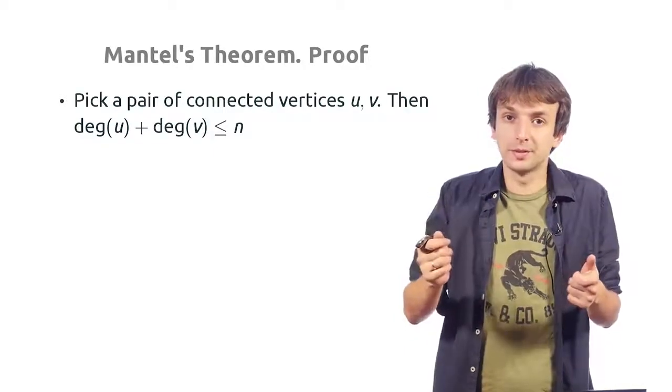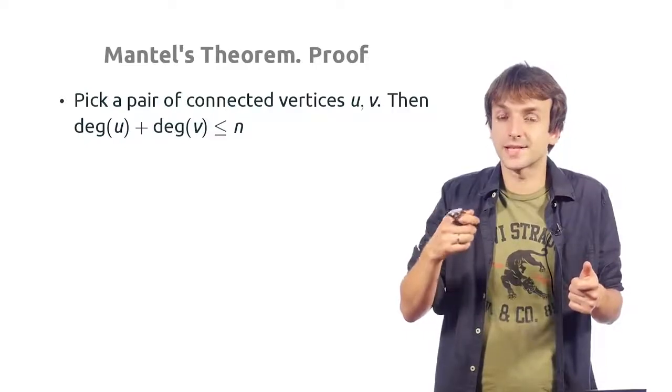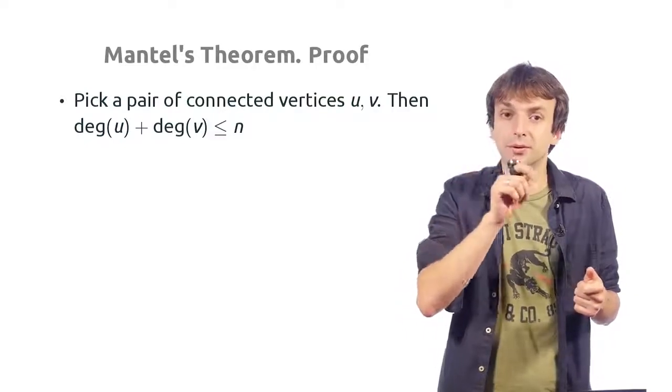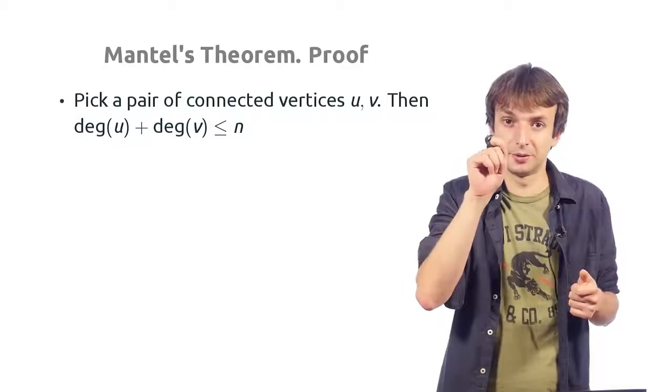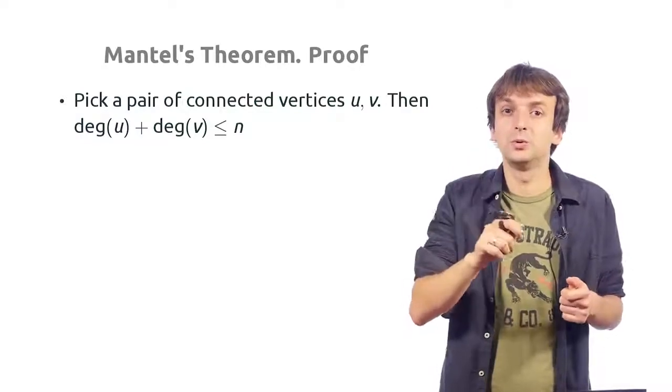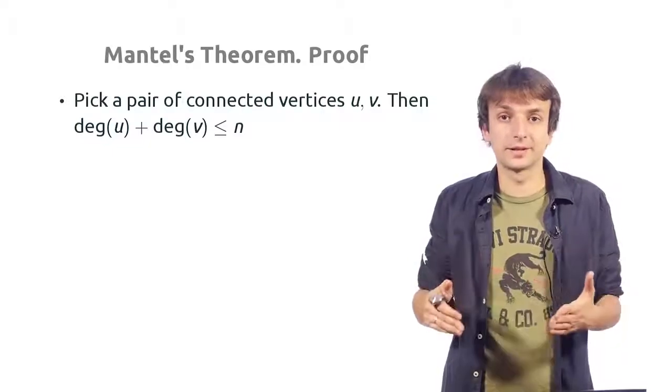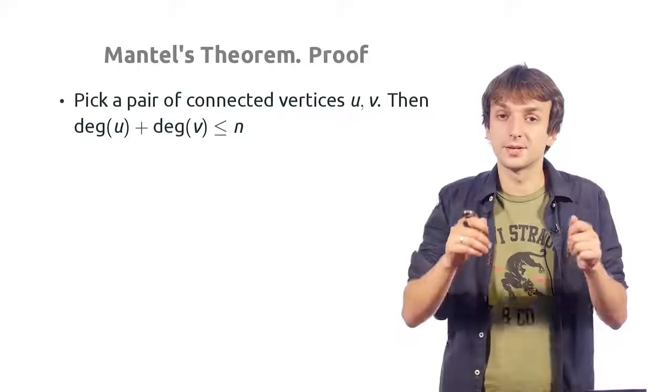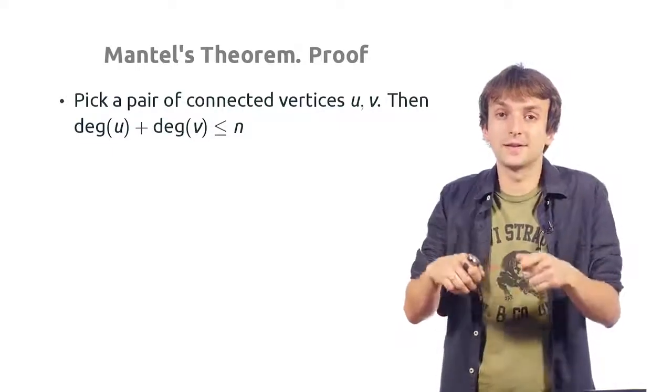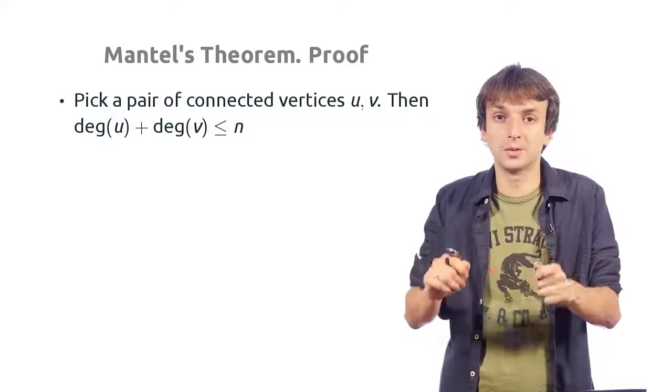there exists some vertex x such that both u and v are connected to x, which forms a triangle. But we know that our graph does not contain any triangles. So, the degree of u plus the degree of v must be at most n.